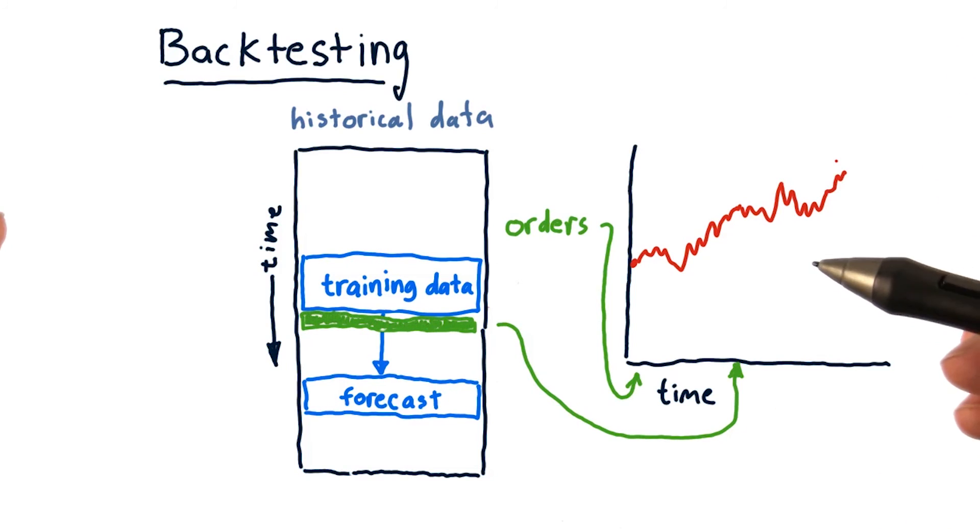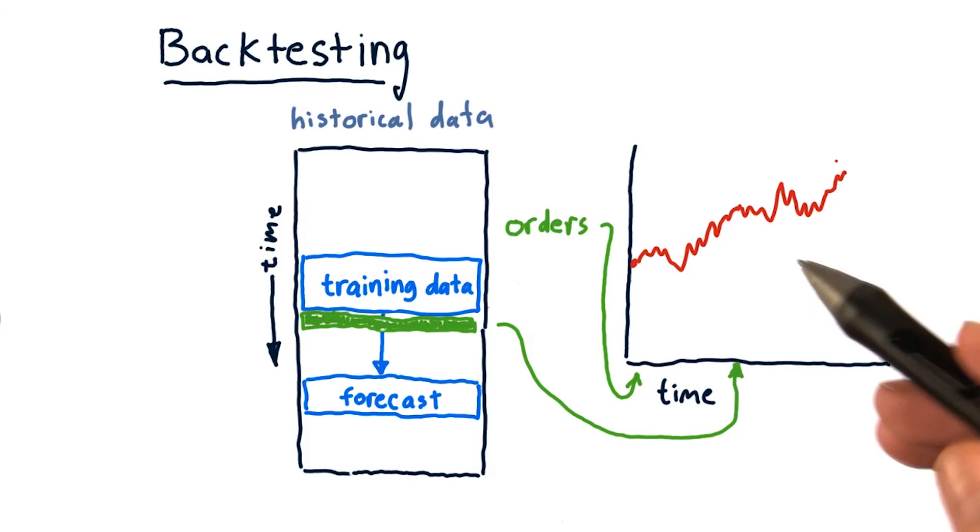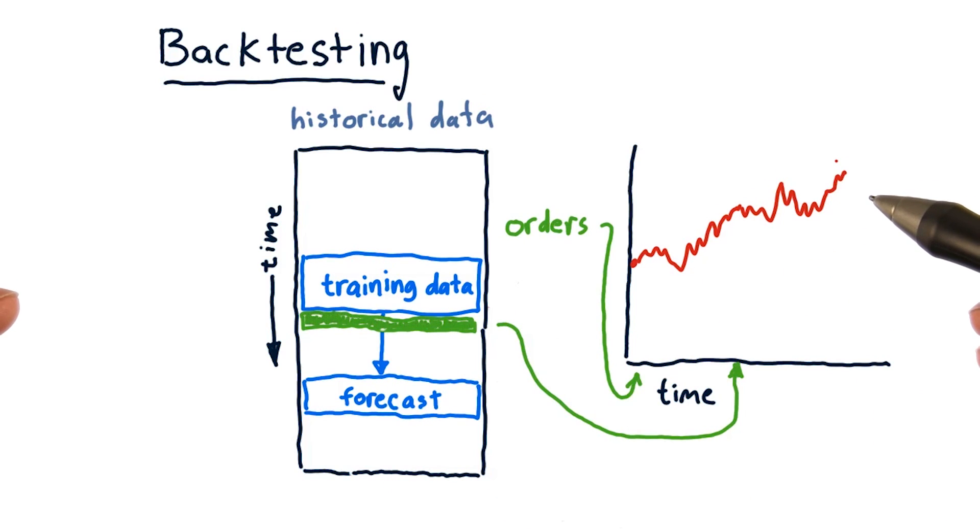Anyways, this process can be repeated over and over again using historical data. And we can simulate our learning algorithm and how it would trade in this way. And that's called backtesting.